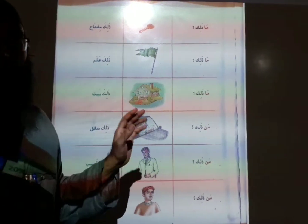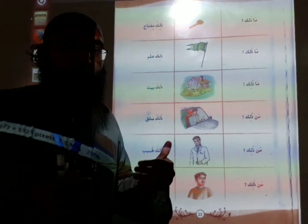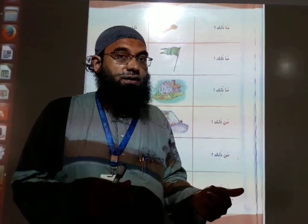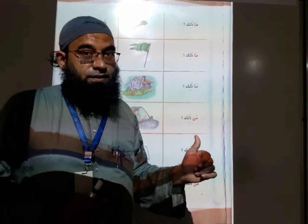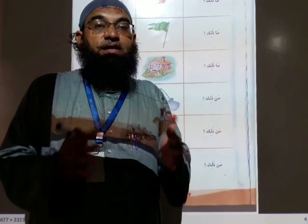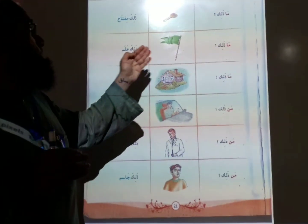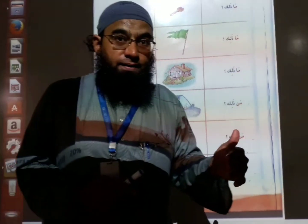Dear students, in this lesson we learned adwat ul-istifham bai muzakkar. We used isim al-ishara al-ba'id bai muzakkar — the far demonstrative pronoun, male — and the question words 'maa' and 'man'. Inshallah, in the next lesson we will learn isim al-ishara al-ba'id bai muzakkar with adwat ul-istifham and preposition words, far — minna.